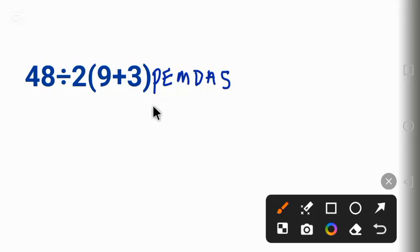Using PEMDAS, P stands for parentheses. Is it here? Yes, so let's begin with this: 9 plus 3 is 12. So we have 48 divided by 2 times 12.